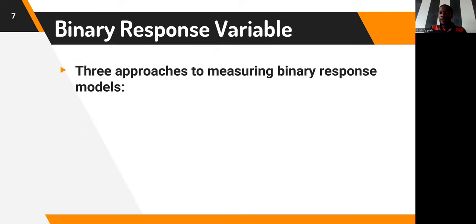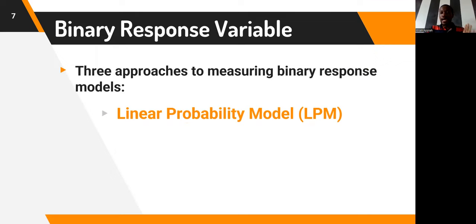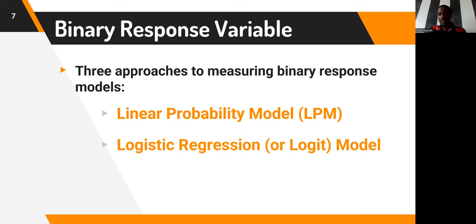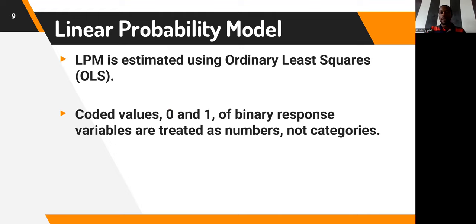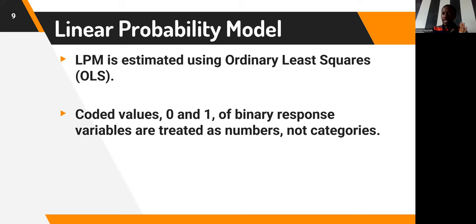There are three approaches to measuring binary response models. The first is the linear probability model, normally abbreviated LPM. The second is logistic regression or the logit model. The third is the probit or normit model. The linear probability model means we are estimating the binary response variable using the ordinary least squares method. The coded values of the binary dependent variable — zero and one — are simply treated as numbers, not categories.